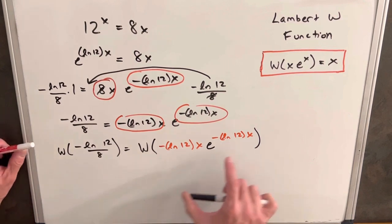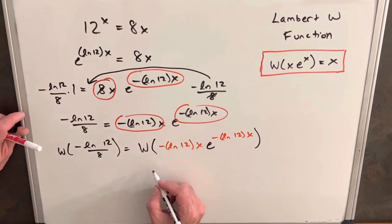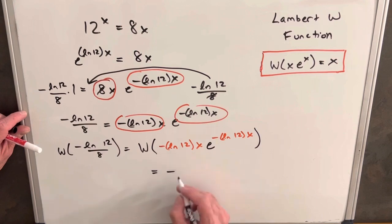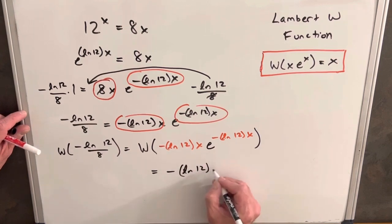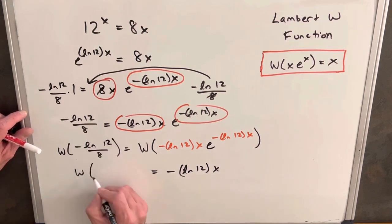So now that our coefficient and exponent are the same, when we take the Lambert W function on the right side, we're just going to have, it's going to return just this value, so it's going to be minus ln 12x. And then on our left side, we're just going to leave this because we don't have a good way to reduce this right now.